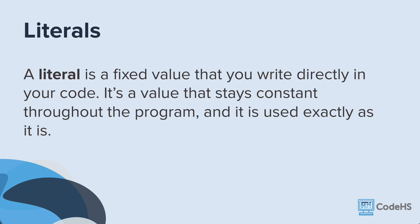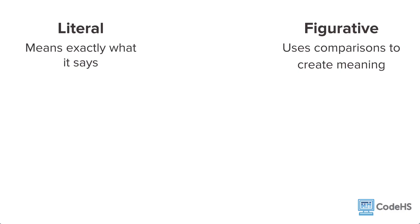First, let's introduce a new vocabulary word: literal. In programming, a literal is a fixed value that you write directly in your code. It's a value that stays constant throughout the program and it is used exactly as it is. You can connect this concept to something you might be familiar with from English class — literal and figurative language. Literal language means exactly what it says, and figurative language uses comparisons to create meaning.